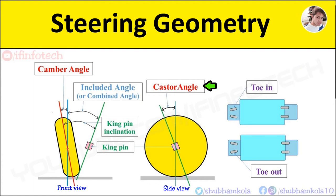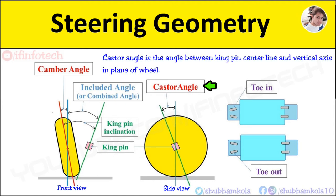So next is castor angle. The angle between kingpin center line and vertical axis in plane of wheel is known as castor angle. It is kept about 3 degrees. If wheel tilts forward, it is called as negative castor angle.